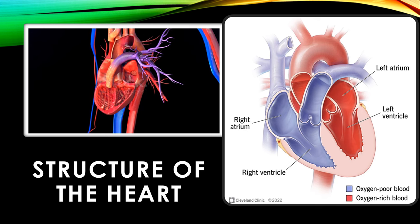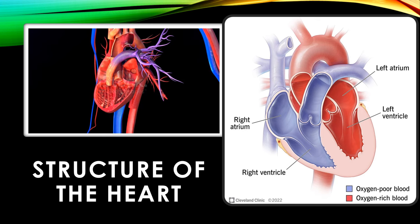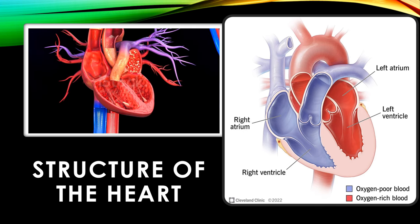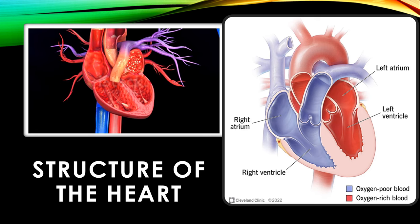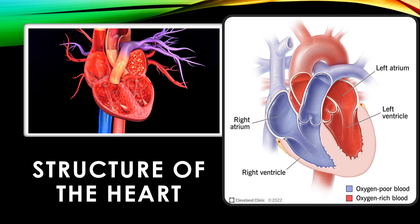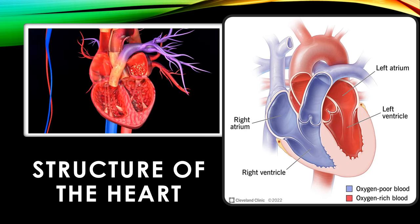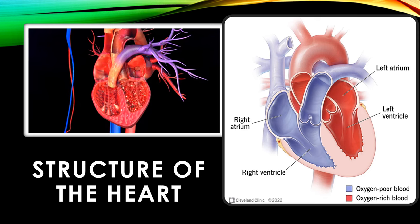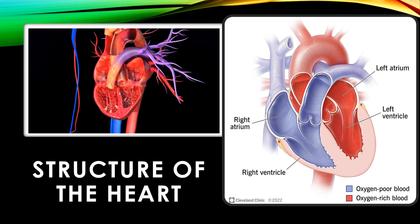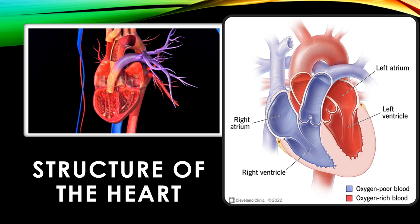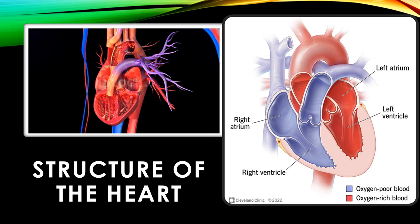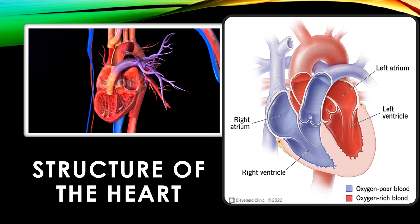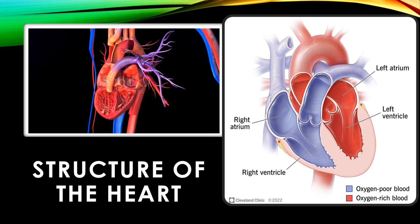the left and right atrium and the left and right ventricles. The atria receive blood from the veins, while the ventricles pump blood out of the heart into the arteries. The heart is also surrounded by a protective sac called the pericardium.